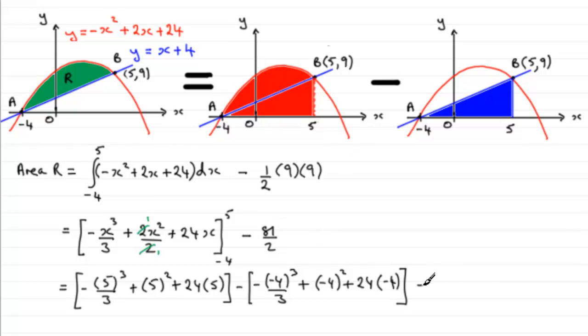And then we've got minus 81 over 2, which is the area of the triangle. Now if you work this out, the first bracket, if you want to check it through, comes to 103 and 1 third units. Then we've got minus, and then this second bracket here comes to minus 58 and 2 thirds. And then we've got minus the area of the triangle, 81 over 2.